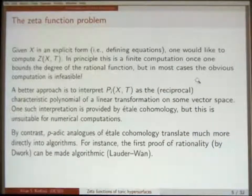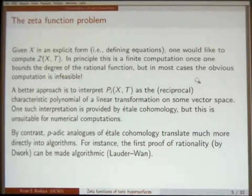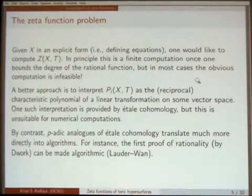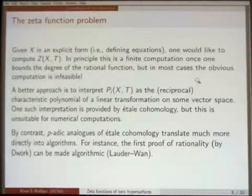But in most cases, that computation will not be feasible, because Q to the N grows fairly quickly, especially when N has to go out to a reasonable size. Typically, listing points on a variety over F_{Q^N} takes time Q to the N times the dimension. That's a big number.